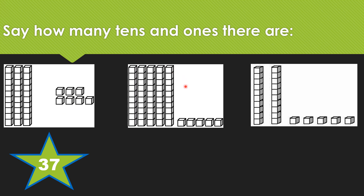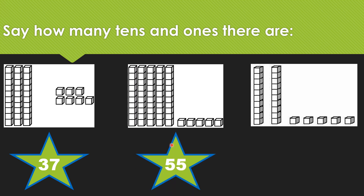Let's try it again. In this square, we see one, two, three, four, five tens and one, two, three, four, five ones. Five tens and five ones — what do you think our number is? If you said 55, you are absolutely right.